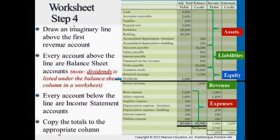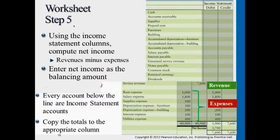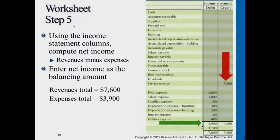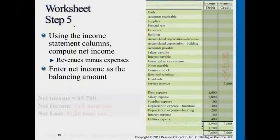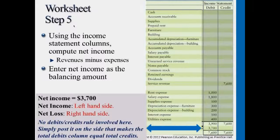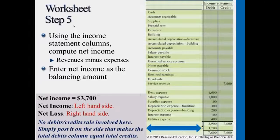Moving on from the income statement column: if you have net income, we put it under the left side; net loss, we put it under the right side. No debit and credit rules involved here — we're simply making the columns equal to each other, debit equal credit.